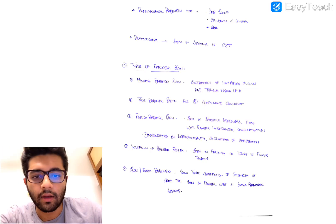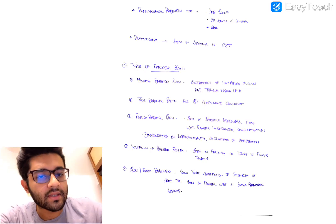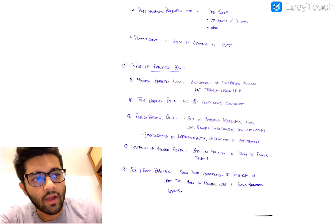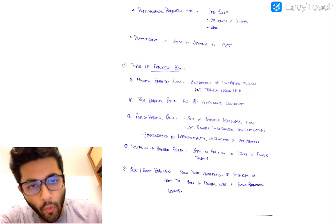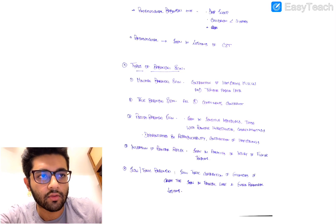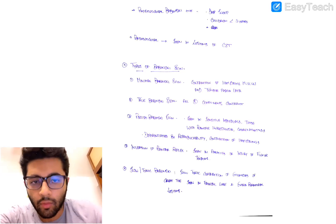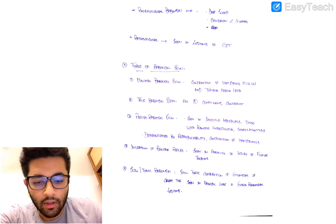A minimal Babinski sign is a Babinski positive in which only the hamstrings and the tensor fasciae latae contract — you don't see any response below that. There is no dorsiflexion of the great toe or fanning.